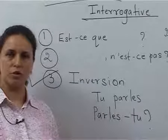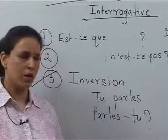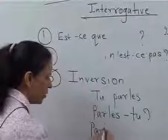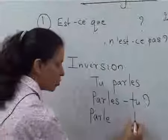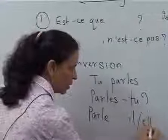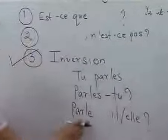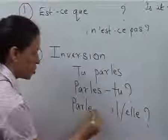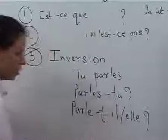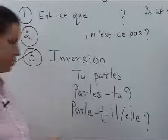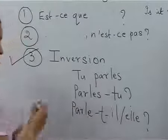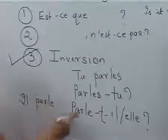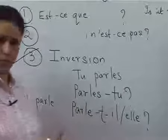Now, we have to be careful about some verbs, especially the E-R verbs in the third person singular, like parle, P-A-R-L-E, and if we invert it with il or with elle. You will notice that there is a vowel and a vowel which clashes. So we will put one extra T over here to make it parle-t-il. It means does he speak?